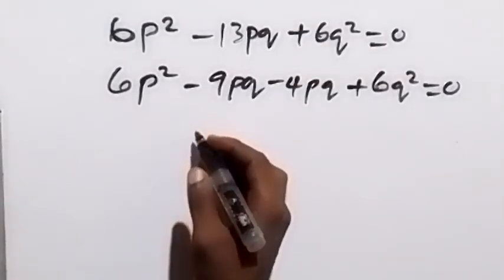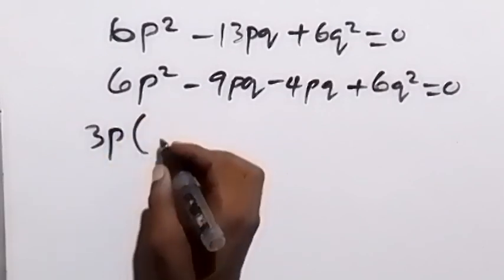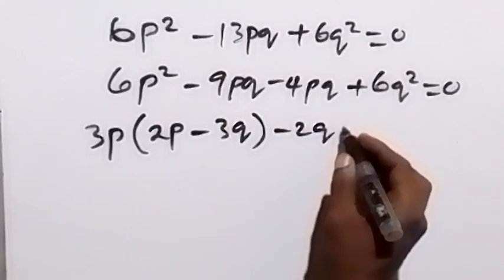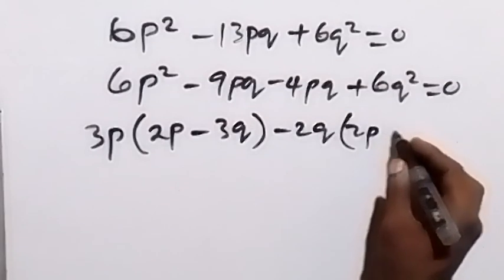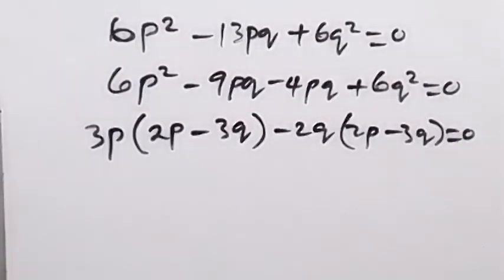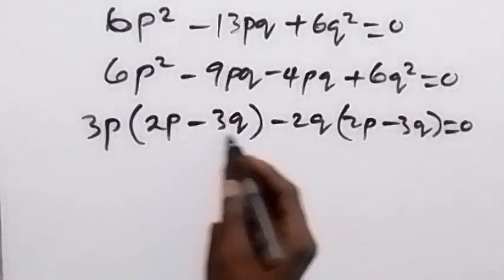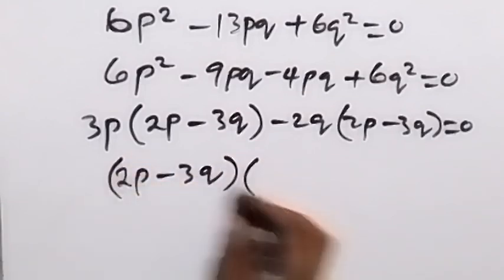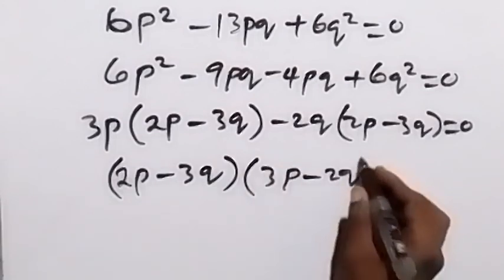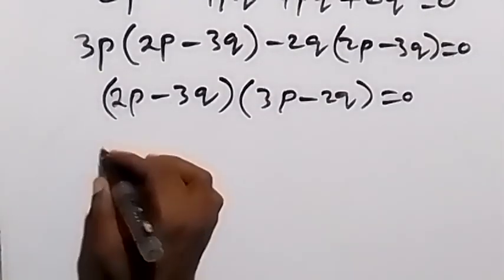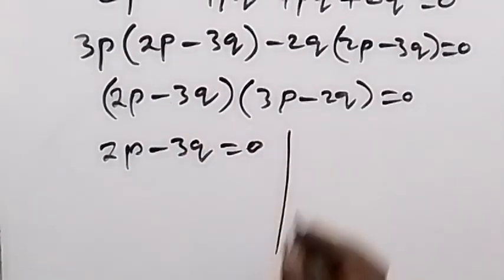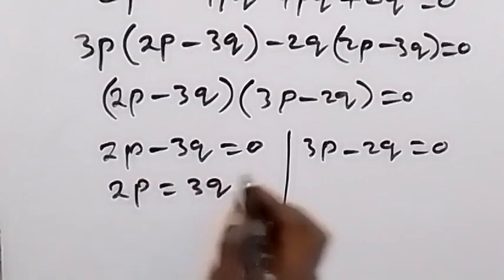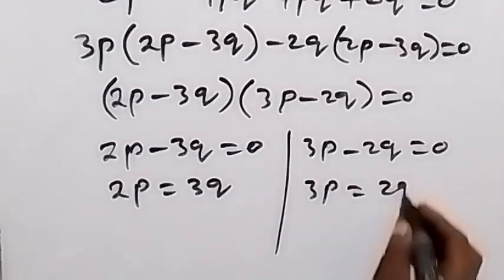Factorizing: from the first two terms, 3t is common, leaving 2t minus 3q inside. From the last two terms, minus 2q is common, also leaving 2t minus 3q. So 2t minus 3q is the common factor, giving us 2t minus 3q, times 3t minus 2q, equals zero. This gives two cases: 2t minus 3q equals zero, and 3t minus 2q equals zero.